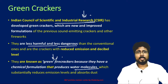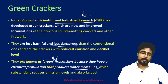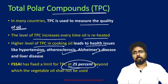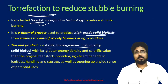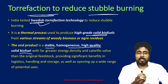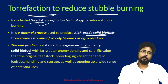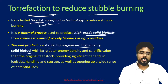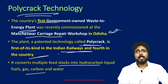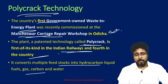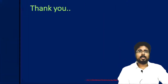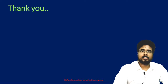Goldsmithite is a new mineral discovered in South Africa, found in Earth's mantle containing niobium, potassium, lanthanum, and cerium. Green crackers are introduced by CSIR with improved technology that does not produce materials harmful for the environment. Total polar compounds (TPC) determine the quality of oil — TPC value increases when oil is reheated. Torrefaction is a Swedish technology that converts stubble biomass into a high-grade solid biofuel to reduce stubble burning. Polycrack technology is India's first government-owned waste-to-energy plant, commissioned at the Mancheswar Carriage Repair Workshop in Odisha by Indian Railways. See you in the next lecture — keep studying and stay tuned. Jai Hind!